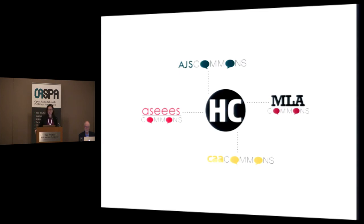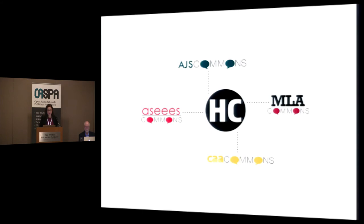Any interested researcher or practitioner in the humanities will be able to create a free account on the Humanities Commons Hub, regardless of their institutional affiliation, employment status, or society membership. Members of those societies will receive additional access to the resources of the societies and will be able to participate in those societies' discussions — and will be able to access everything to which they're entitled with a single sign-on, maintaining a single profile that extends across the network.